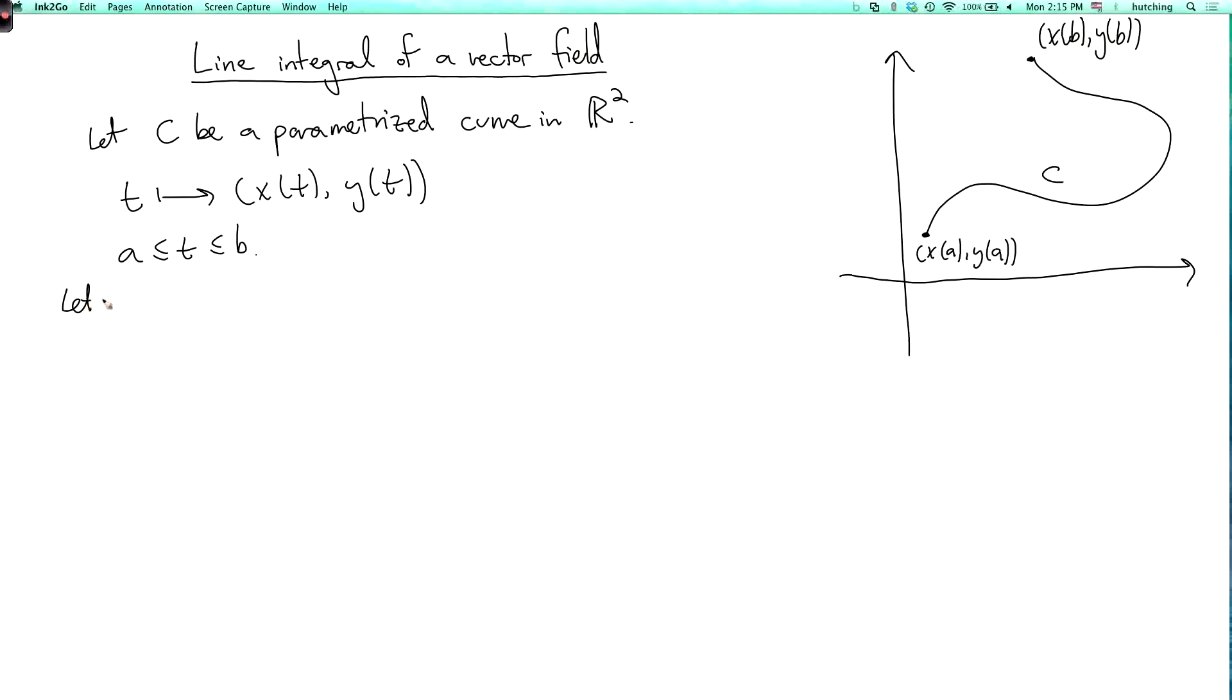Now suppose we have a vector field F. Let's assume this is defined in some domain that contains C. So maybe the domain D is some big domain like this. For every point in this domain, we have a vector. So if you're in this domain, then F(x,y) is a vector. Let's call it <P(x,y), Q(x,y)>.